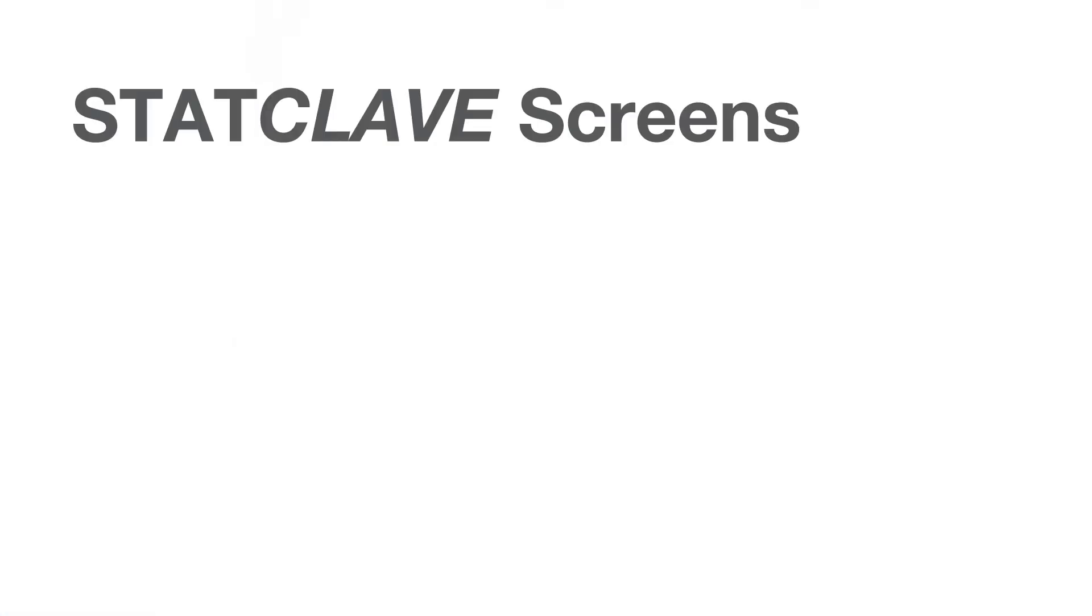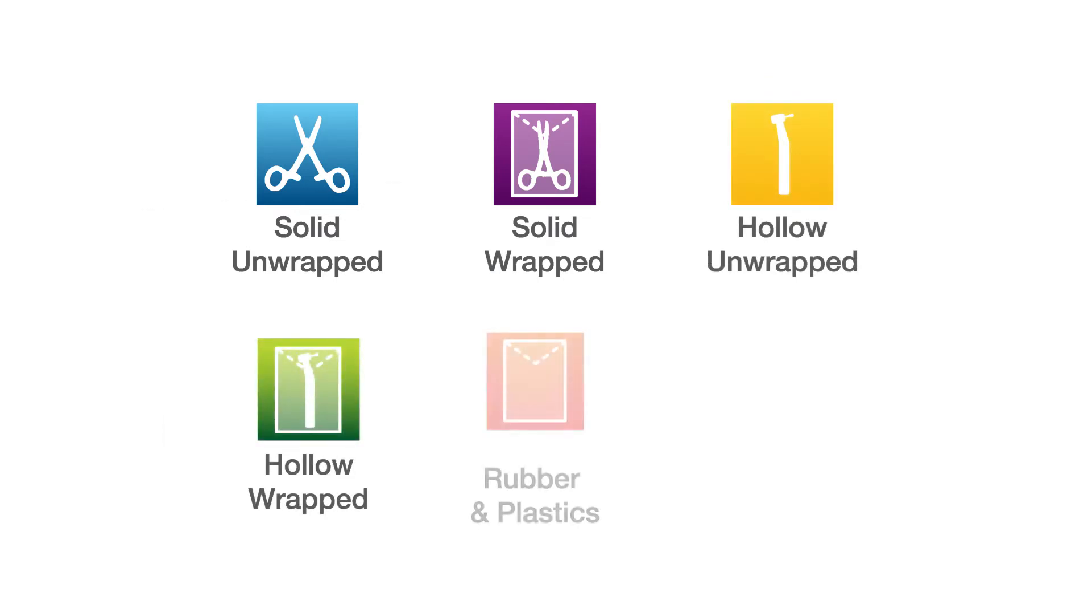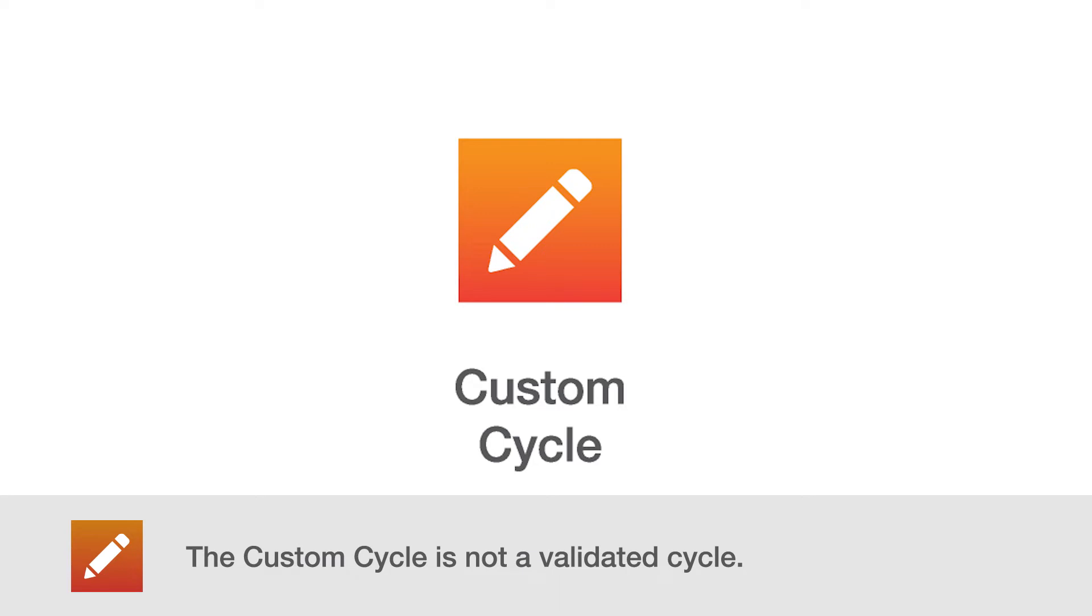The StatClave offers six validated cycles: solid unwrapped, solid wrapped, hollow unwrapped, hollow wrapped, rubber and plastics unwrapped, a textile porous, and on some models, a custom cycle is available. If your unit is equipped with a custom cycle, consult your operator's manual to learn about the proper use of this cycle.